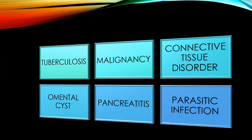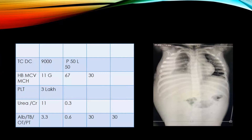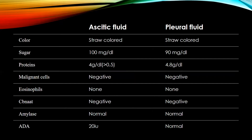From the initial blood counts, renal function test and liver function test, all issues related to kidney, liver and cardiac were normal. LFT alone showed minimal hypoalbuminemia of 3.3. X-ray showed right-sided pleural effusion with massive ascites. Fluid analysis: both ascitic and pleural fluid were straw colored. Malignant cells in both were negative. Eosinophils were none in both ascitic and pleural fluid. CBNAAT done in ascitic fluid, pleural fluid, and RGHCBNAAT were negative. Amylase in ascitic fluid, pleural fluid, and blood were normal. ADA was also normal.